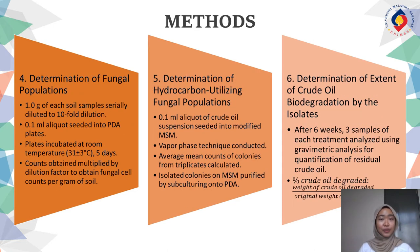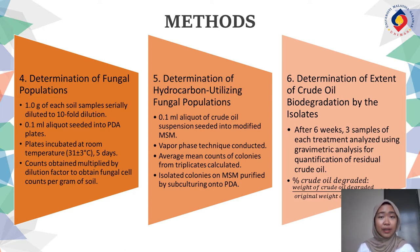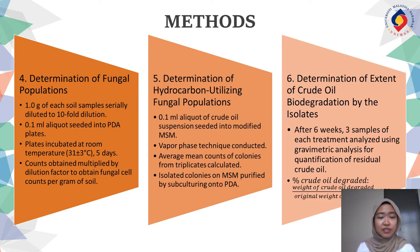Fourth, determination of fungal population. One gram of each soil sample is serially diluted to 10-fold dilution. Then 0.1 ml aliquot is seeded into PDA plates and incubated at room temperature for 5 days. Counts obtained are multiplied by the dilution factor to obtain fungal cell counts per gram of soil.